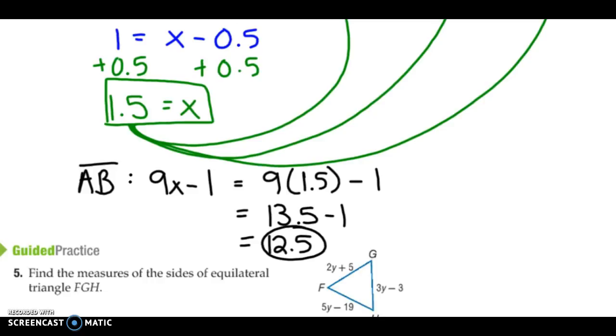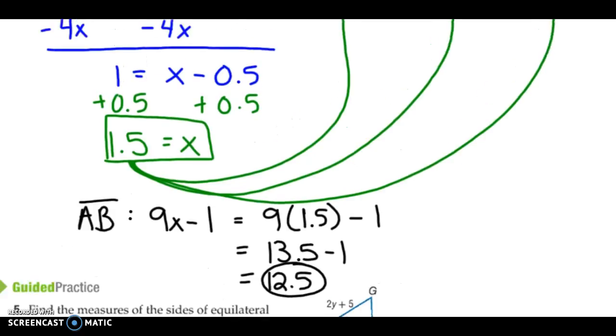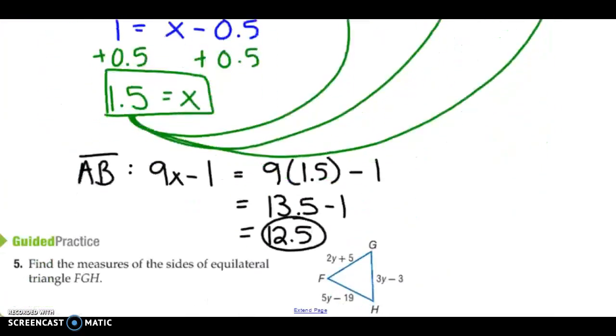Now we look at the side. We see 4X plus 1. 4 times 1.5 plus 1. 4 times 1.5 is 6 plus 1. AC is 7.